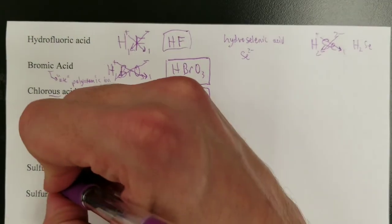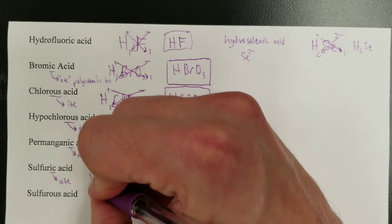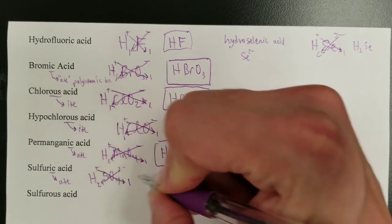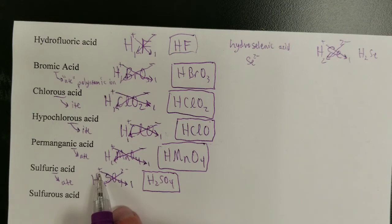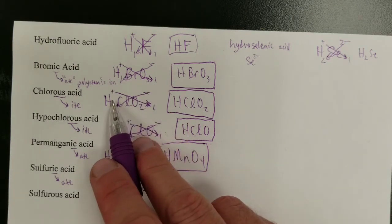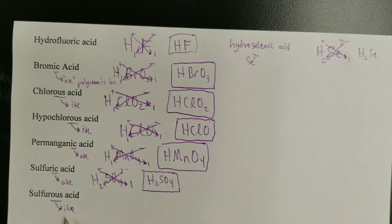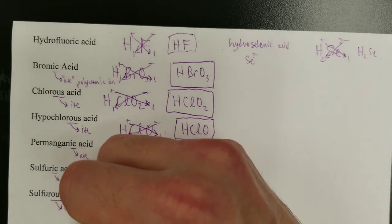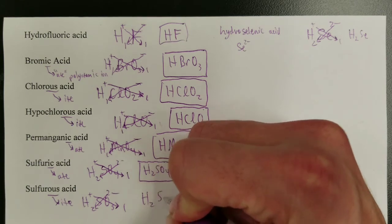Sulfuric acid has the '-ic' ending, meaning the anion is sulfate: SO₄²⁻. It's an acid, so it contains hydrogen. Crossing the charges gives 2 hydrogens and 1 sulfate — H₂SO₄. The 2-minus charge requires 2 hydrogens to balance it out. Sulfurous acid has the '-ous' ending, meaning the anion is sulfite: SO₃²⁻. Adding hydrogen gives H₂SO₃.